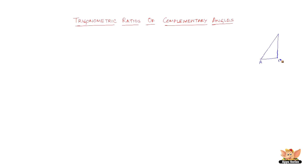Let's name it ABC. This is the right angle. This is angle A, this is angle B, and this is angle C. In this right angle triangle, do you see any pair of complementary angles? The sum of all angles equals 180 degrees, and one angle is 90 degrees, so the sum of angle A and angle C must be 90 degrees. Hence, angle A and angle C are complementary angles.